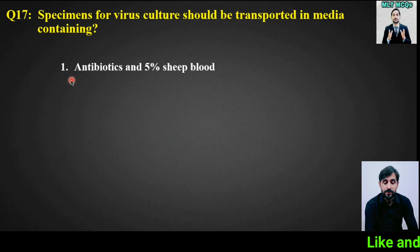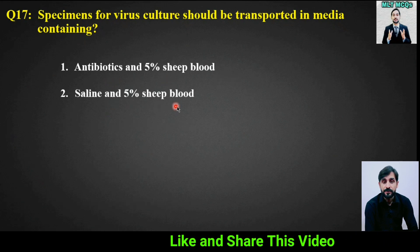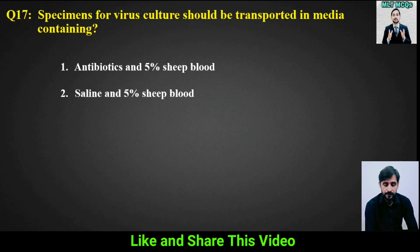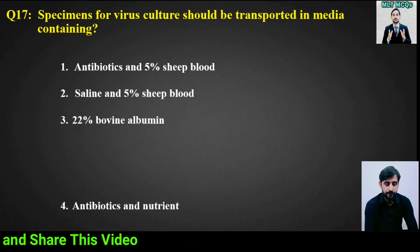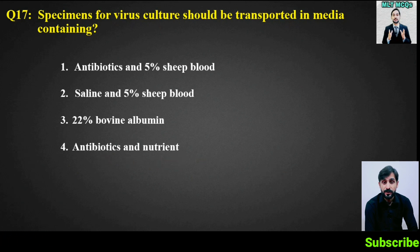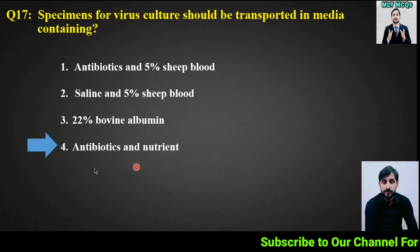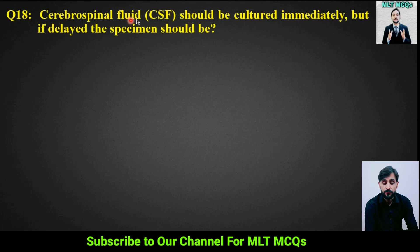MCQ number 17: Options include antibiotics and 5% sheep blood, saline and 5% sheep blood, 22% bovine albumin, antibiotics and nutrient. The right answer is option 4: antibiotics and nutrient.